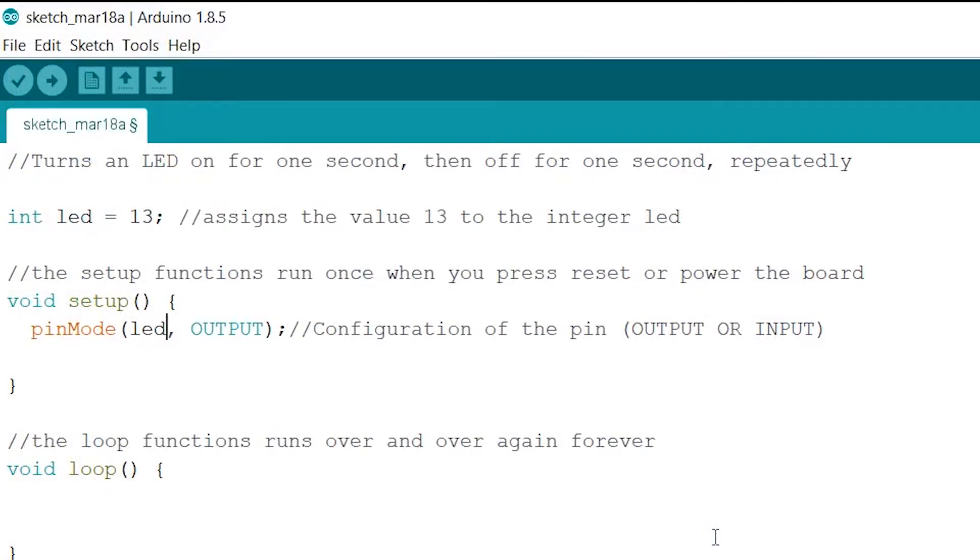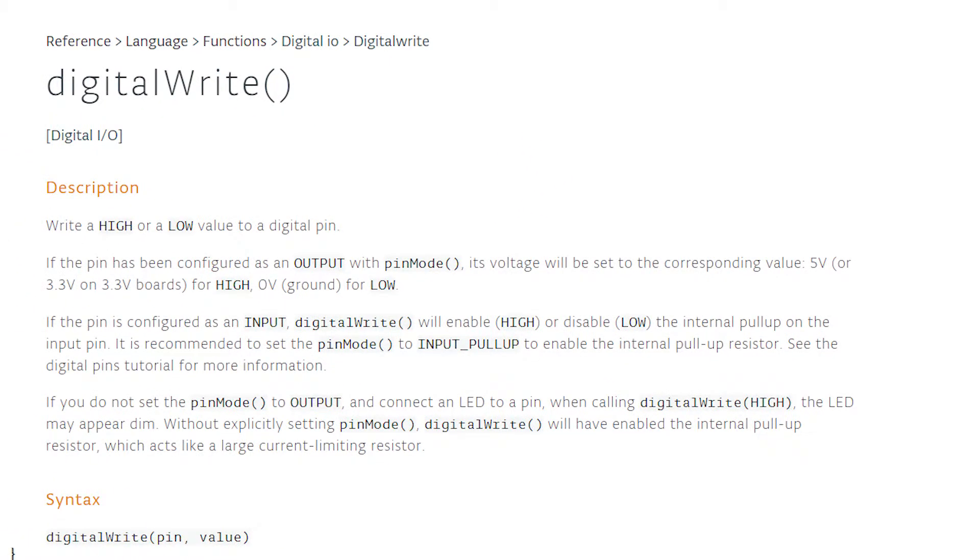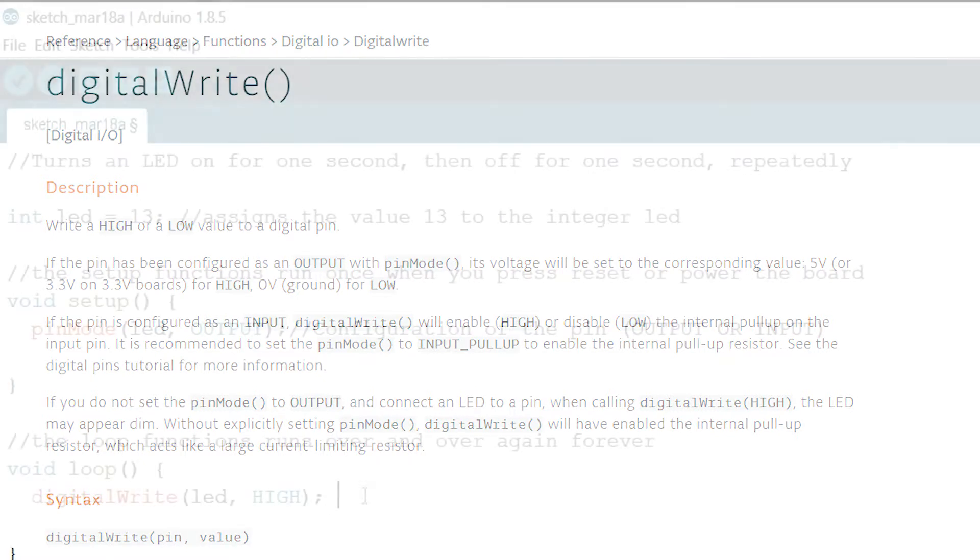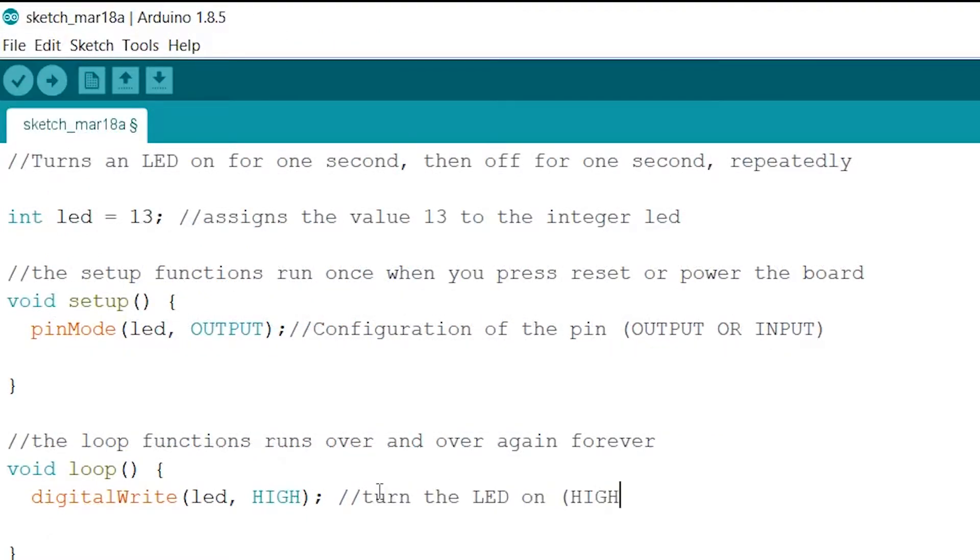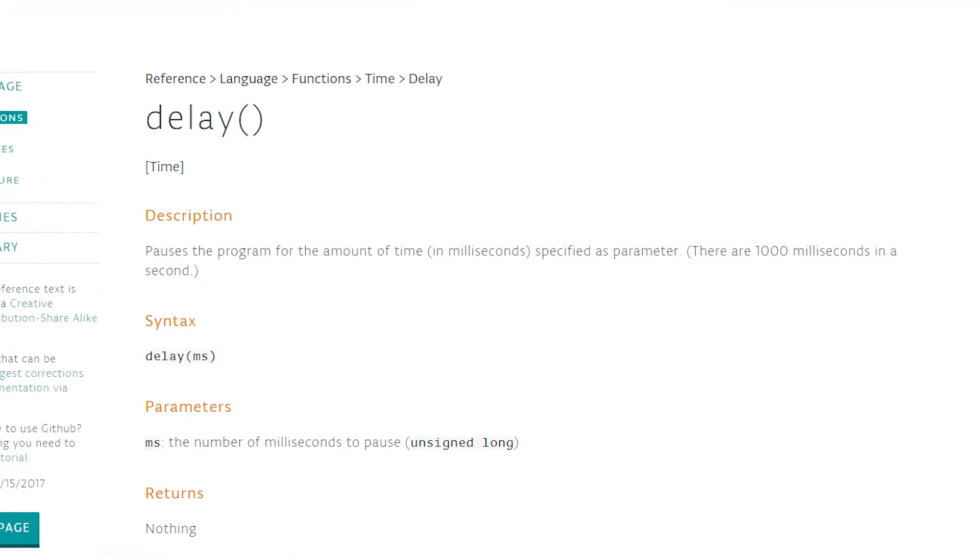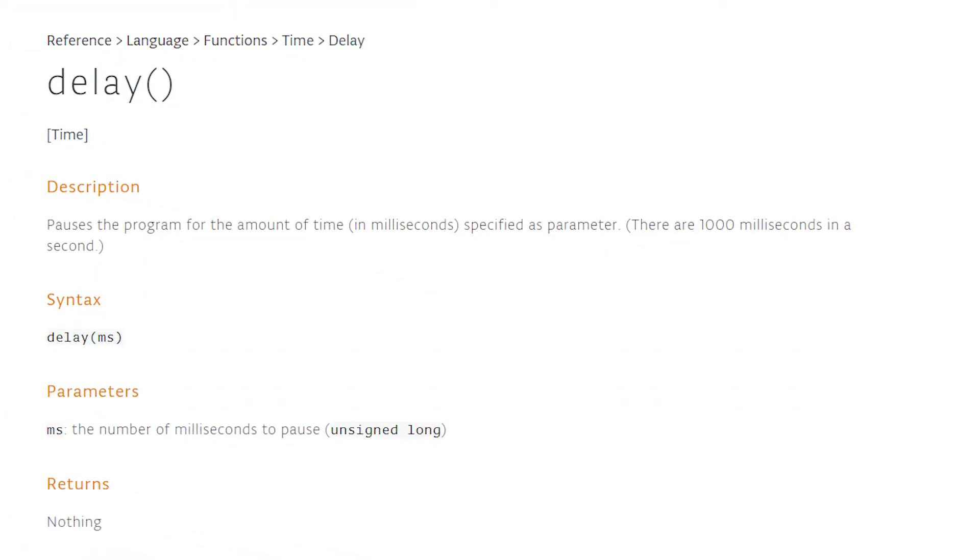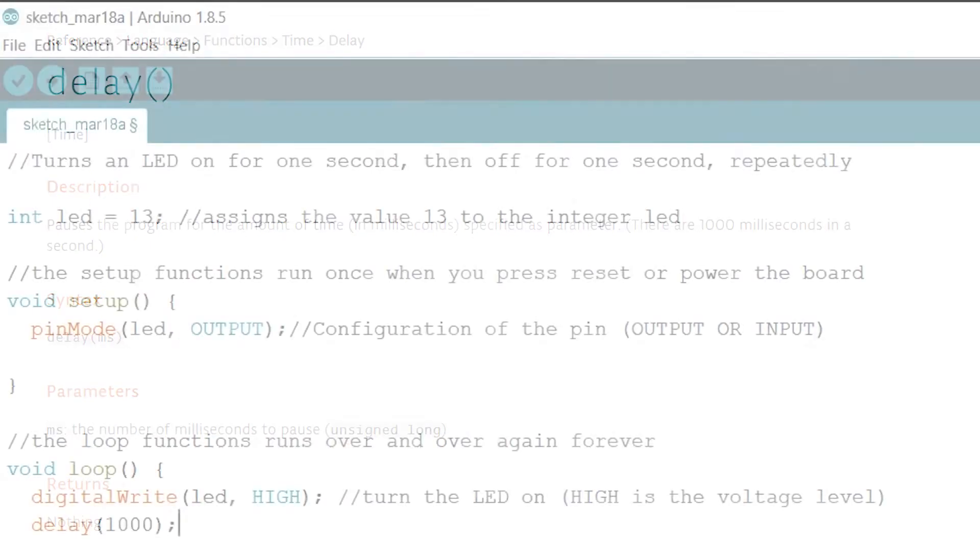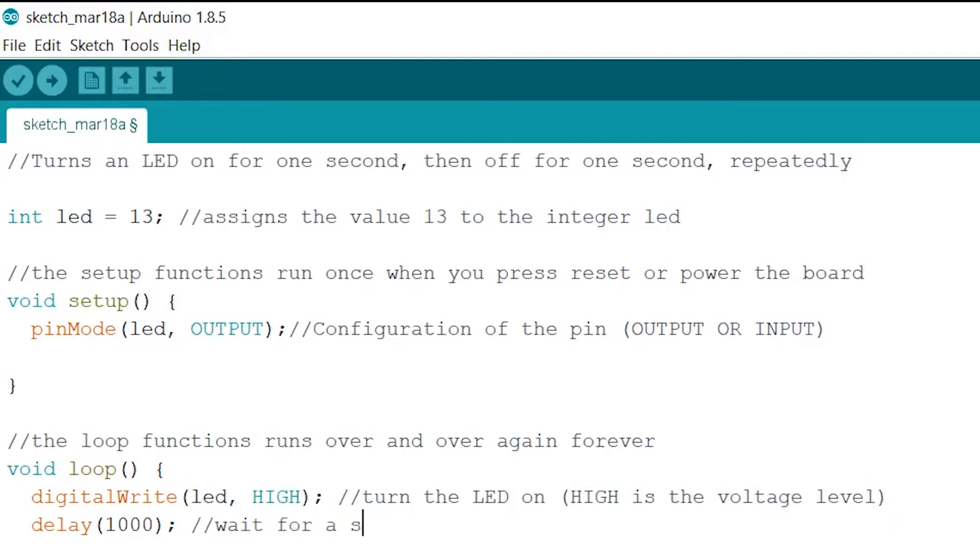Now you want to write digitalWrite in our void loop. digitalWrite LED HIGH. digitalWrite allows you to write a HIGH or a LOW value to a digital pin. So HIGH meaning high voltage, so the LED will turn on. LOW meaning a low voltage, so the LED won't turn on. So I add a little comment saying turn the LED on. HIGH is the voltage level. Then we write delay 1000. This one's pretty obvious. Delay pauses the program for the amount of time in milliseconds. So 1000 milliseconds meaning one second. And we add a little comment saying wait for a second.